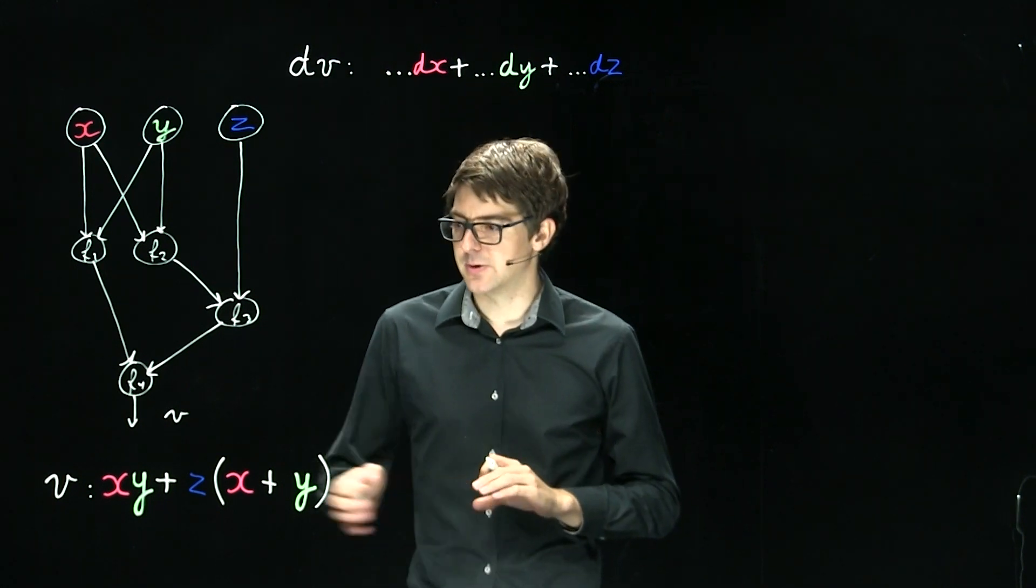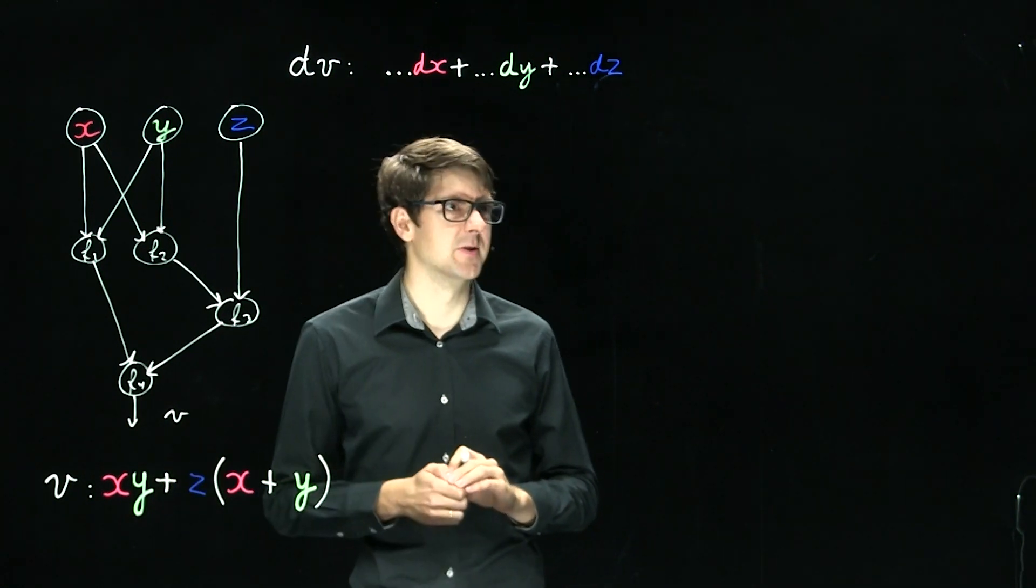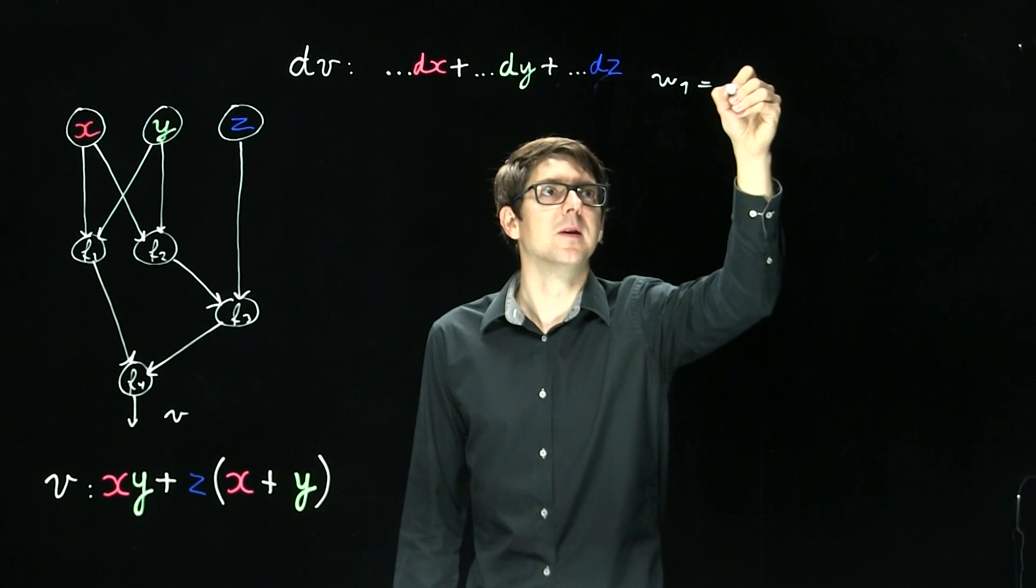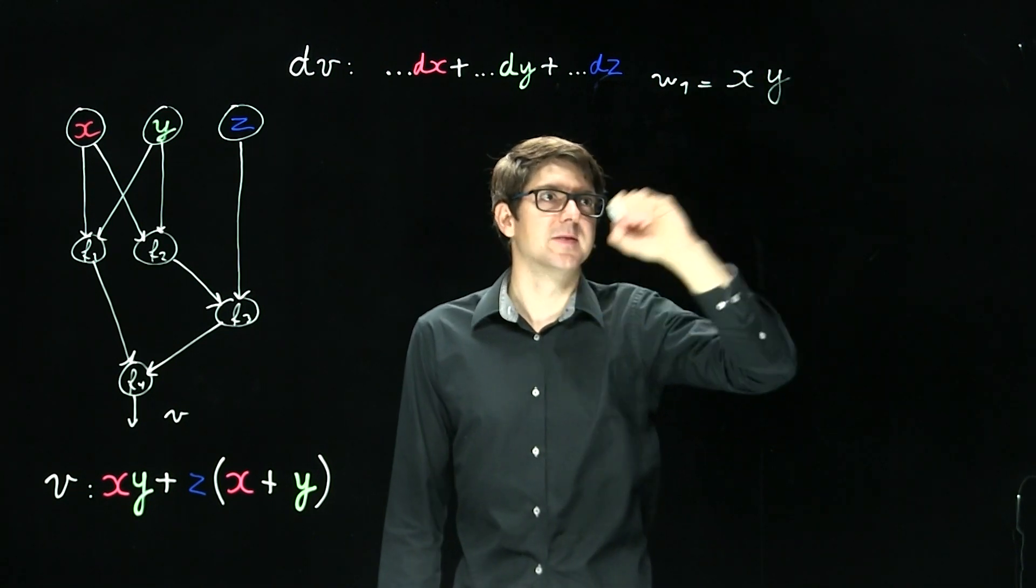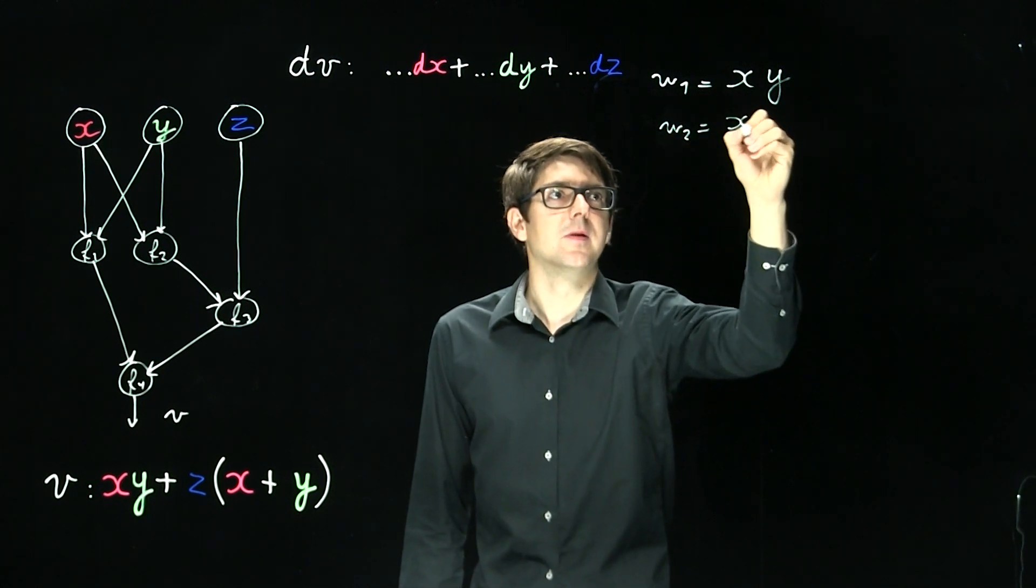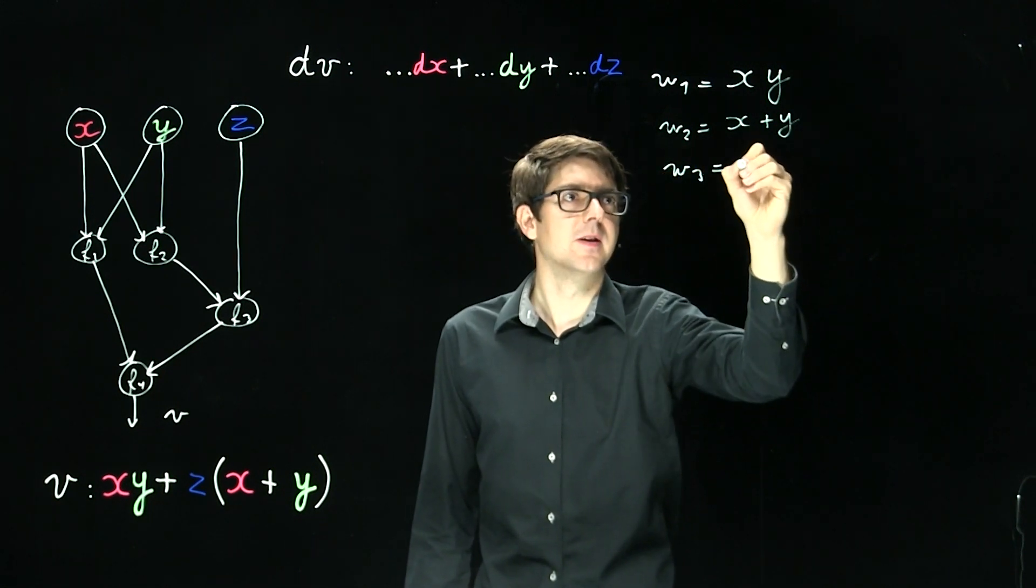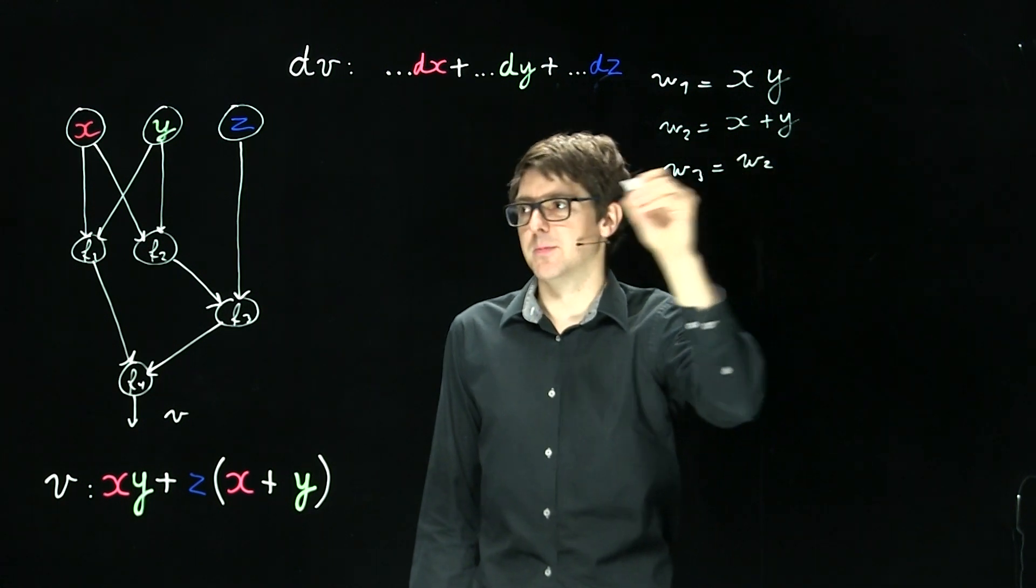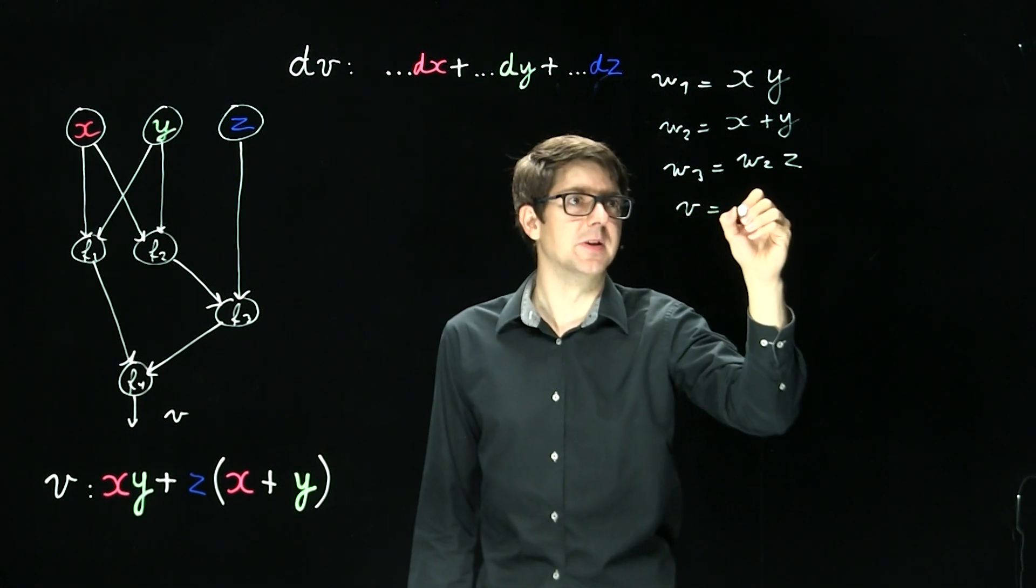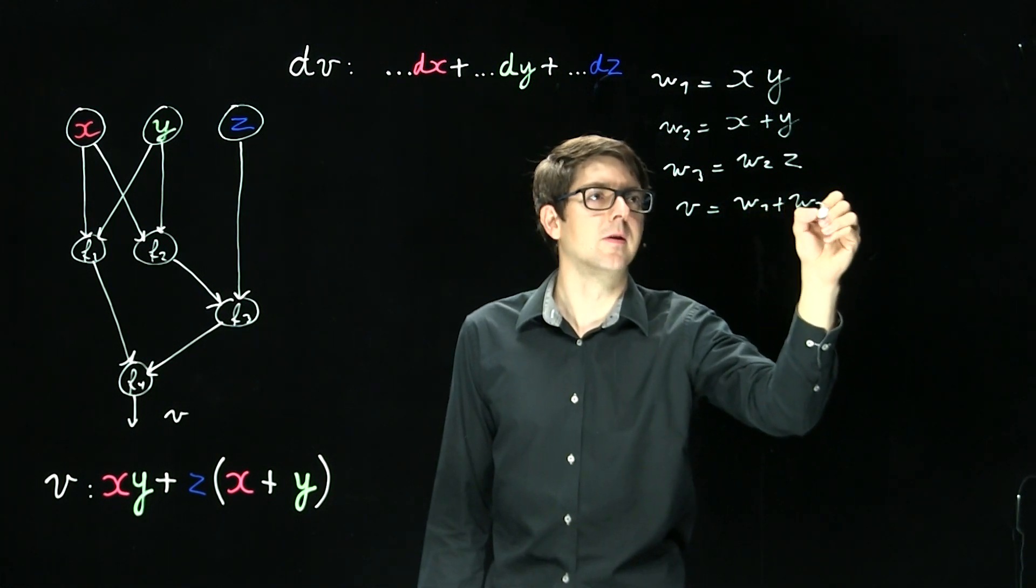I'm going to start with writing some sub-expressions that will help us to understand this expression. So I'm introducing an intermediate variable w1, that is nothing more than x times y. Intermediate variable w2, x plus y. w3, that's w2 times z. And finally, our final expression, v, that you want to compute the gradient of, is w1 plus w3.